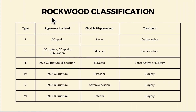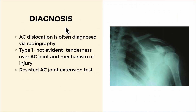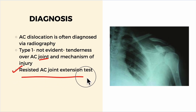This classification is called the Rockwood classification, and a summary table provides a concise overview of what we just covered. Regarding diagnosis, acromioclavicular joint dislocation is often diagnosed via radiography. Grade one is not evident on imaging; it can be identified by tenderness over the acromioclavicular joint and the mechanism of injury. There is also a test called the resisted acromioclavicular joint extension test.